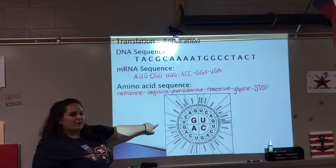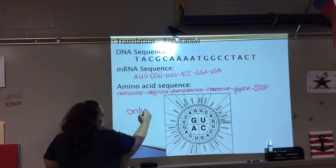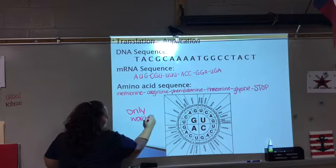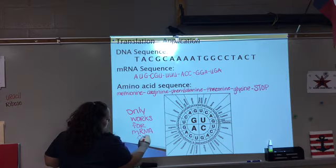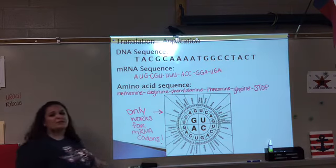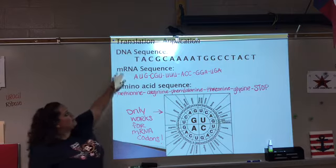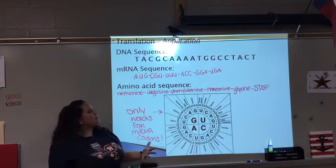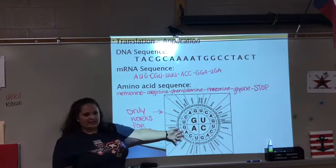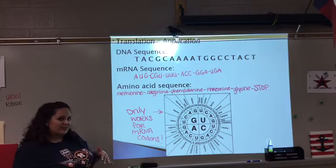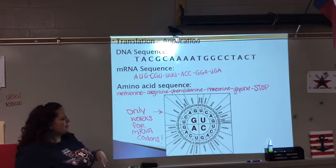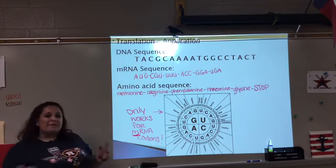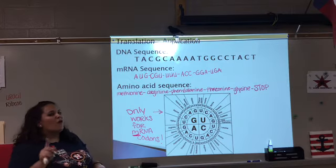Notice that this wheel only works for mRNA codons — that is super important. If you tried to look up the DNA sequence on your wheel, it would be impossible because you start with a T and there are no T's in this chart. If you tried to look up your tRNA sequence, you would make a big mistake because you would be looking up the wrong amino acid. Always remember that mRNA is what has the message and it has the codons, which are the secret code words for an amino acid.